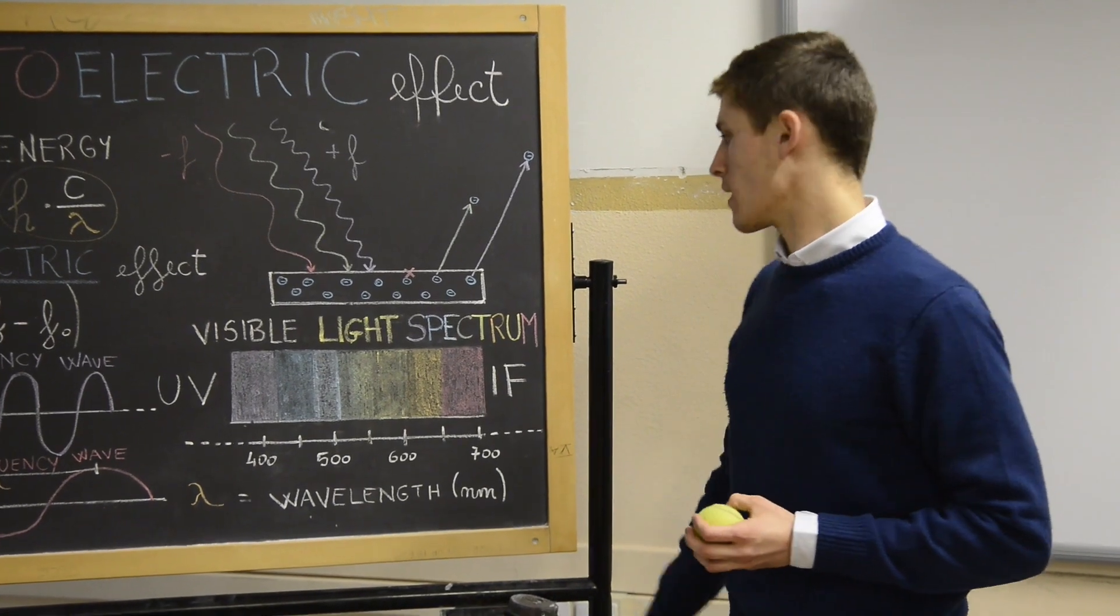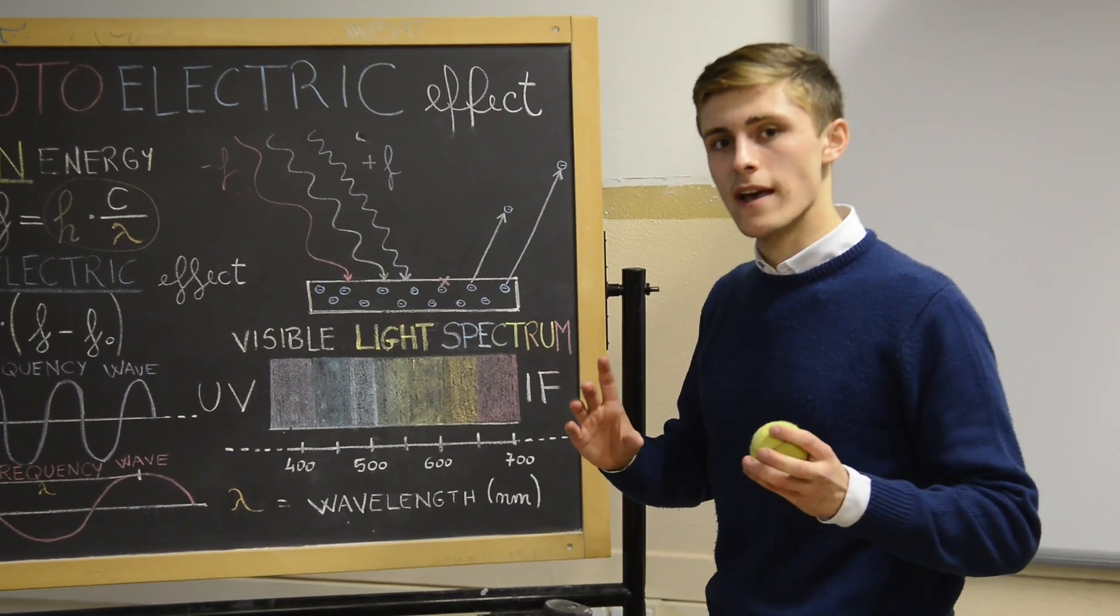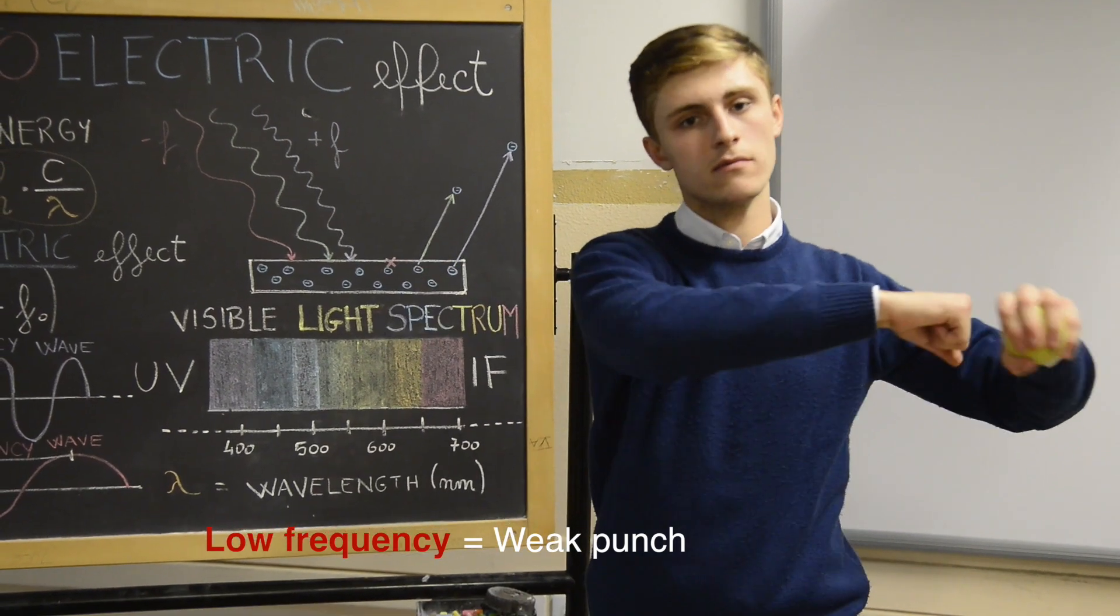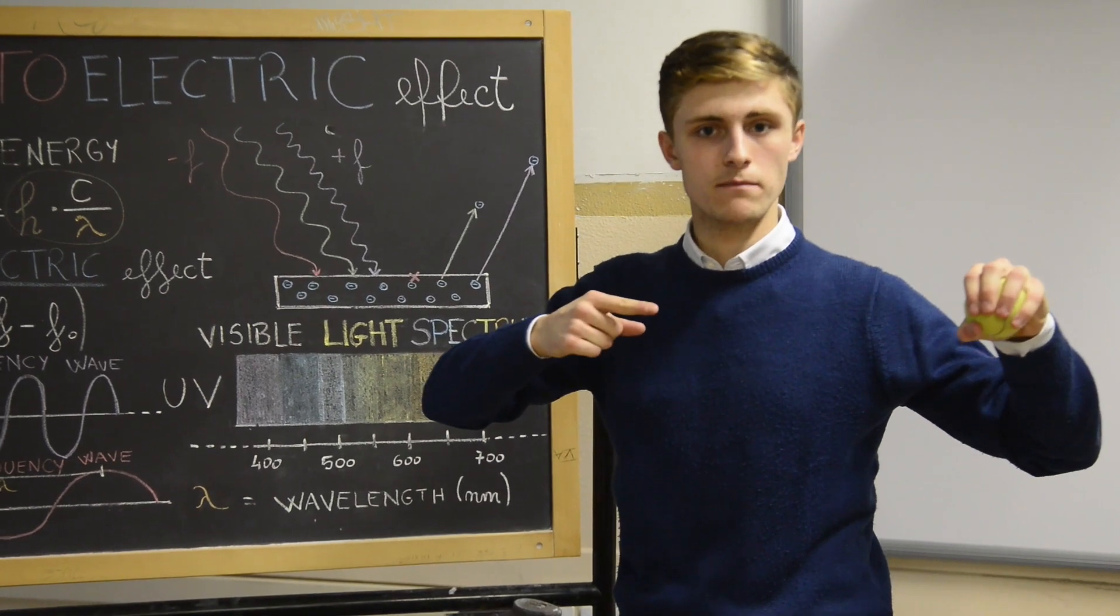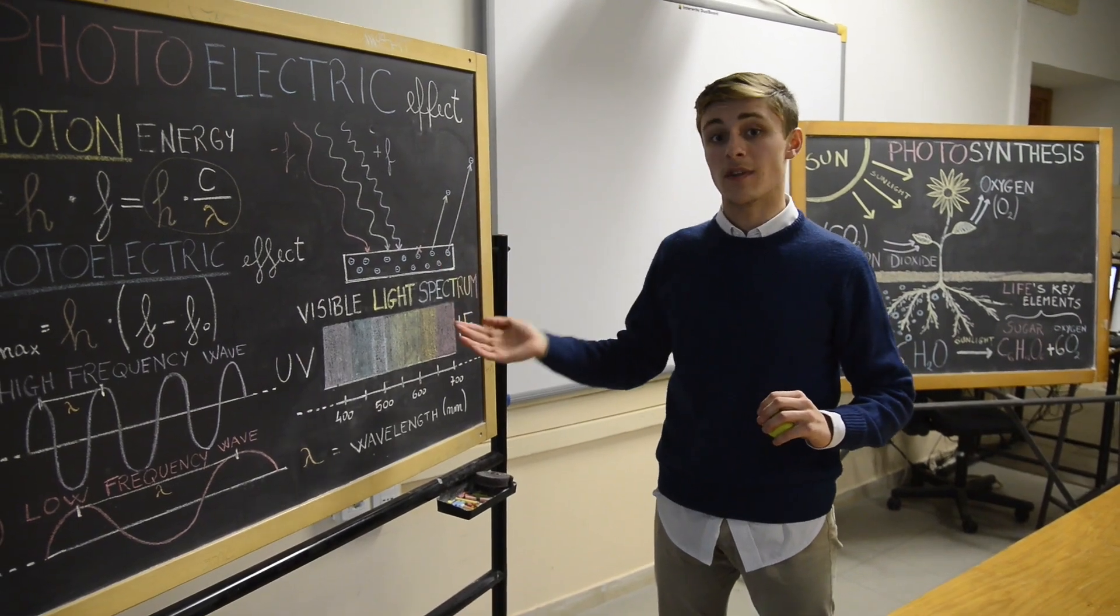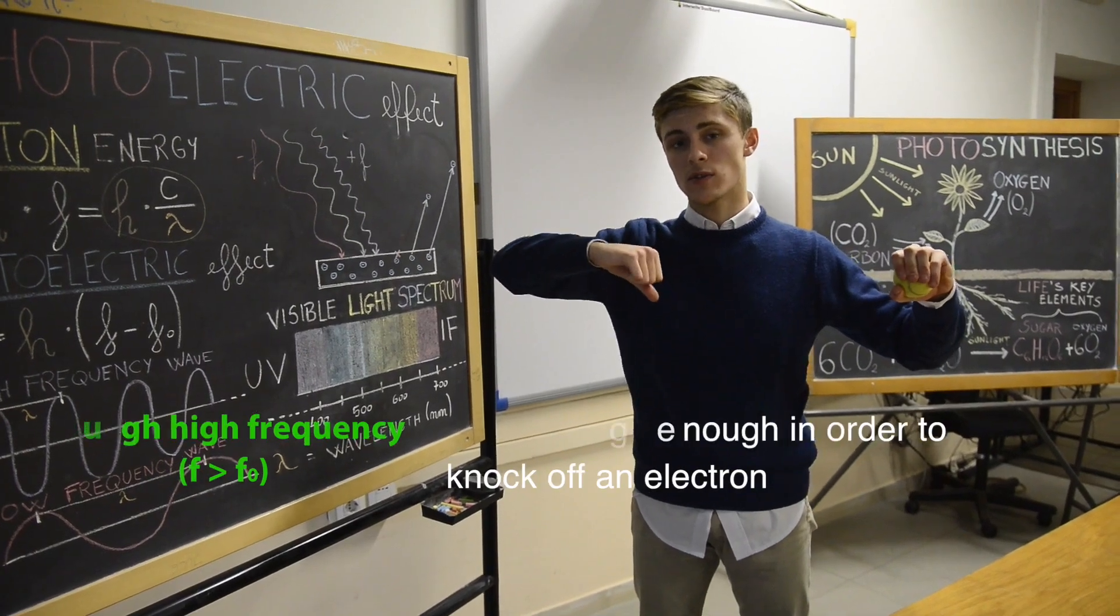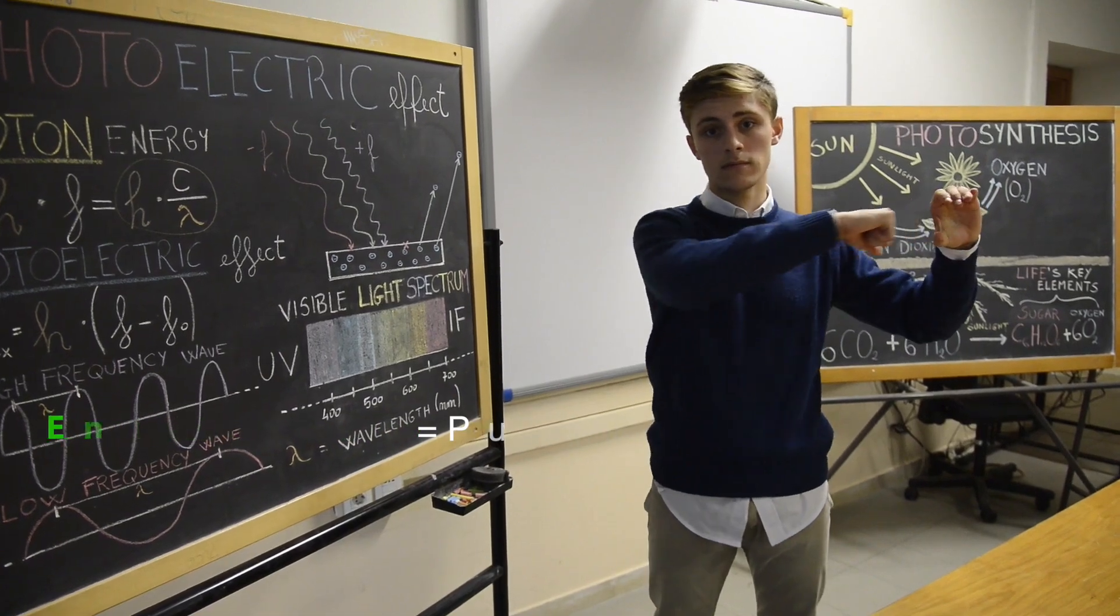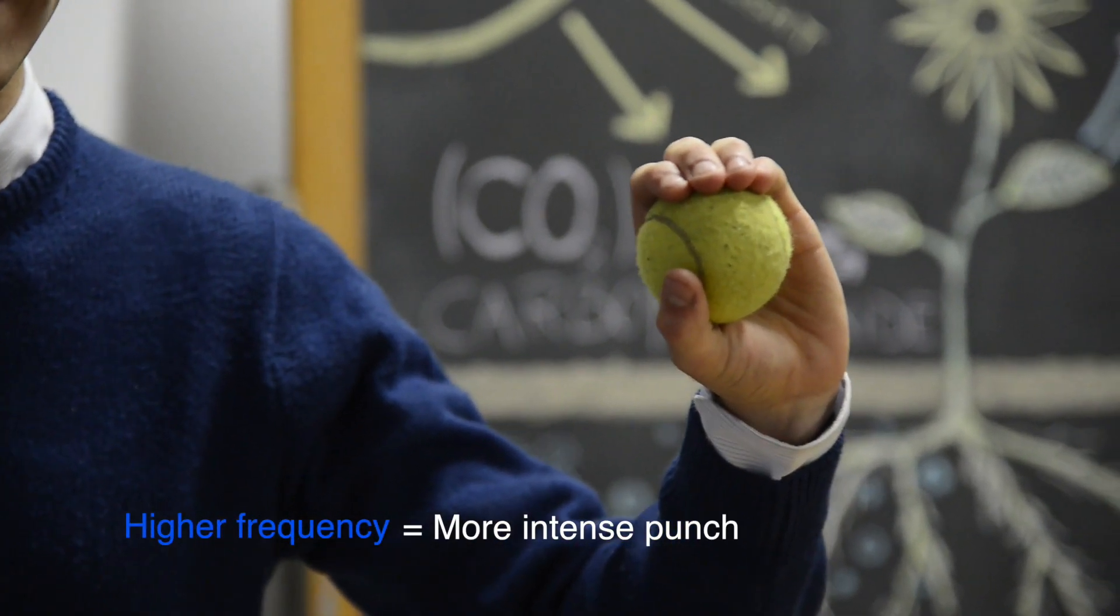So, let's take the red color from the light spectrum. This color is going to have a long wavelength. A long wavelength means low frequency. Low frequency is going to be a very weak punch and the electron is going to be still stuck inside the metal surface. But if we take the green color from the light spectrum, this is going to have a higher frequency because the wavelength is shorter than the red color. Your punch is going to be stronger and this is going to knock off your electron. The blue color is going to be even more intense.